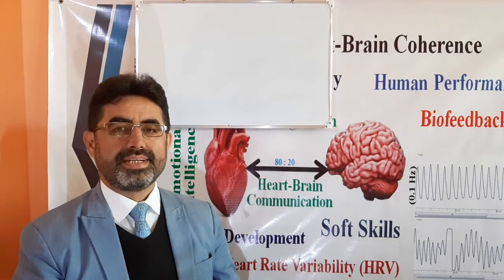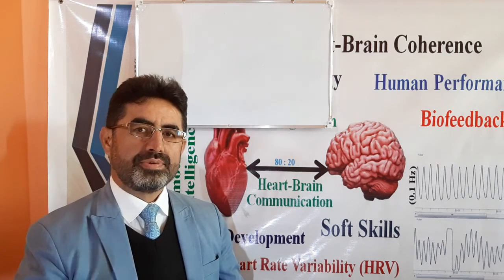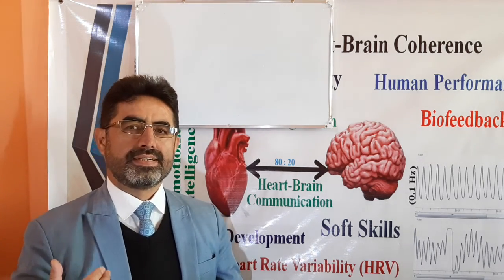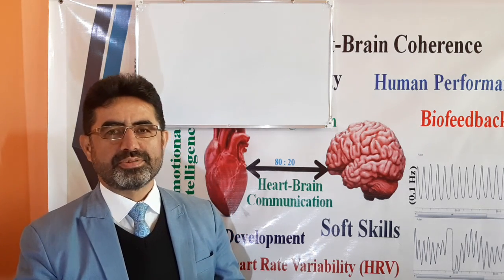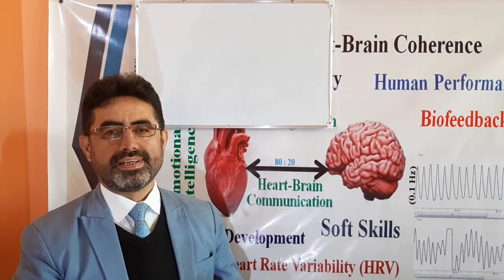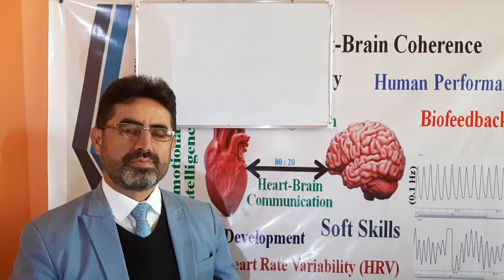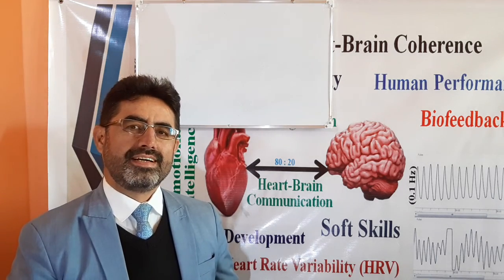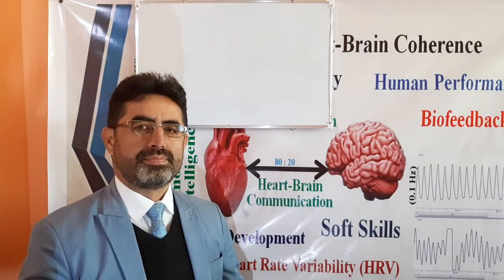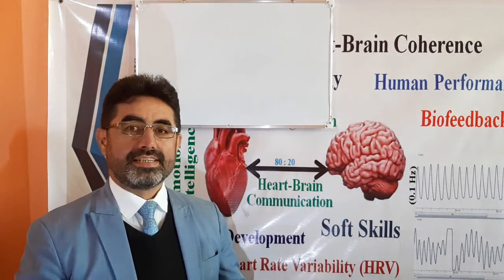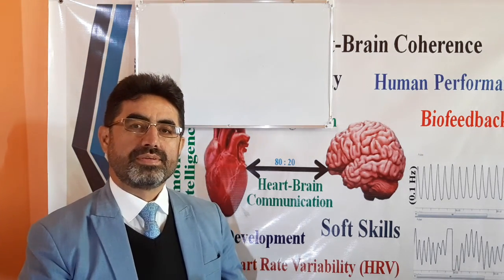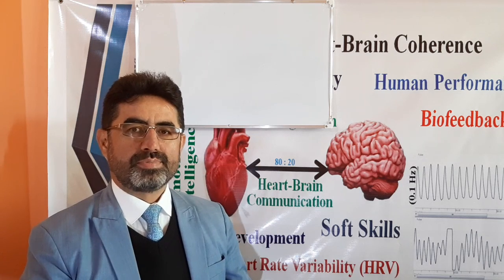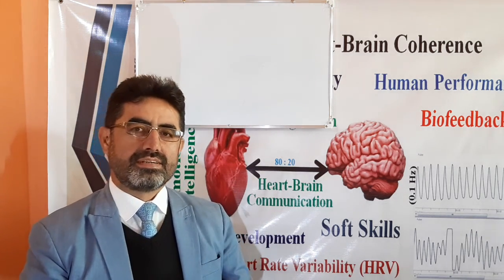The interaction between our heart and brain is mutual, continuous, and ongoing. Both organs share and send information and affect one another. The brain sends information to the heart through particular channels, especially through the autonomic nervous system and the vagus nerve. The heart also sends information to the brain through pressure waves, electromagnetic waves, and by secreting particular hormones like oxytocin and atrial natriuretic peptide, mostly through the afferent system and the vagus system.